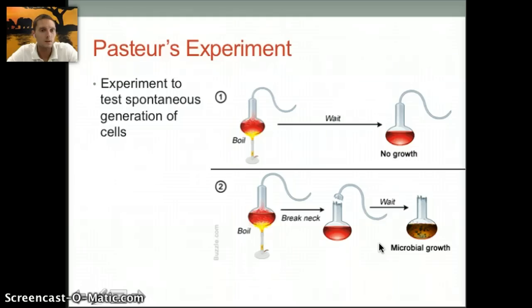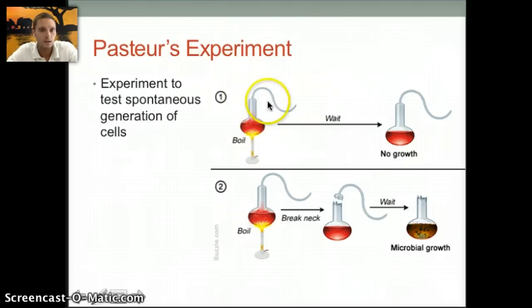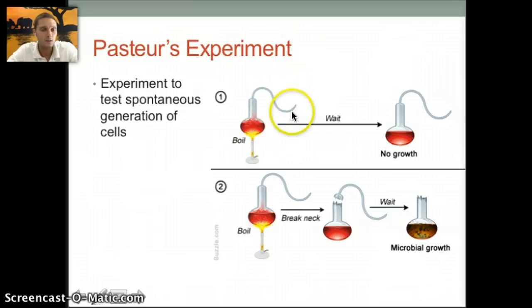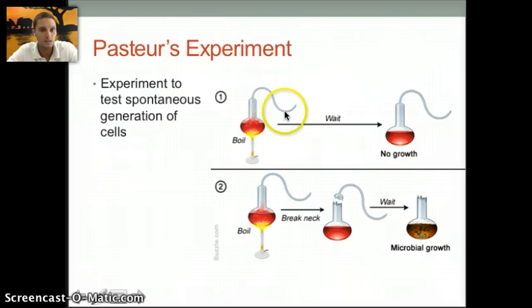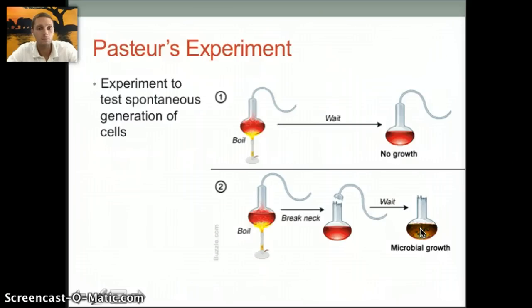The last thing to discuss is Pasteur's experiment, which gives us information about spontaneous generation of cells. It was done to test whether cells could spontaneously generate in our natural environment today. Pasteur took flasks with broth, boiled them to kill off any bacteria, and used a swan-neck or S-shaped flask. After boiling, the broth was left to sit and there was no growth — dust particles containing bacteria and microbes would enter the open top but settle in the S-shaped neck. When the experiment was redone with the neck broken off, allowing dust particles to fall into the broth, microbial growth was observed.